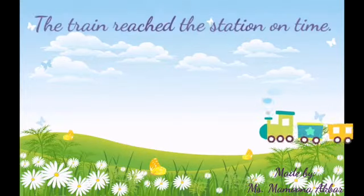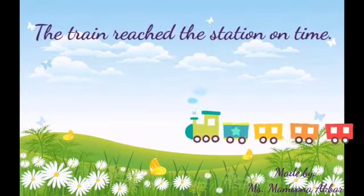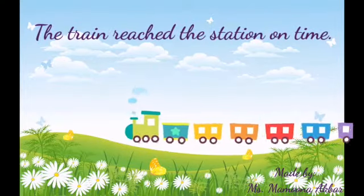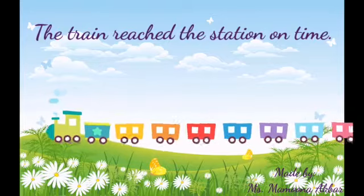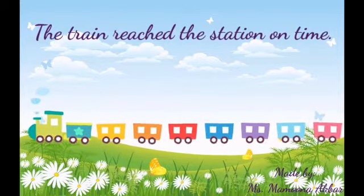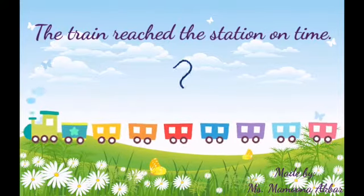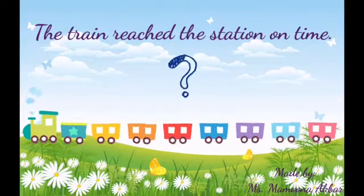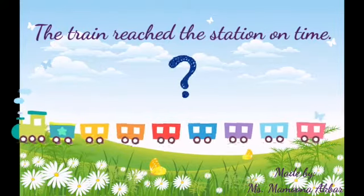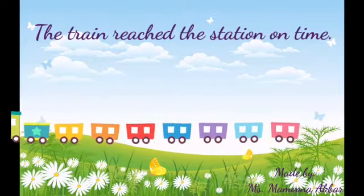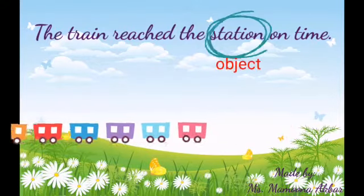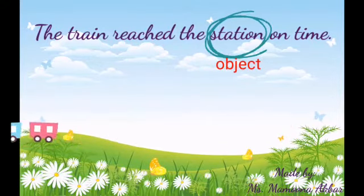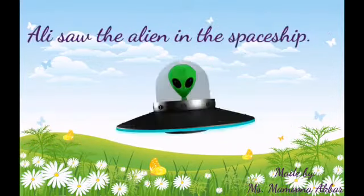Another example is: 'The train reached the station on time.' Where did the train reach? Yes, we know that it reached the station. So station is an object.